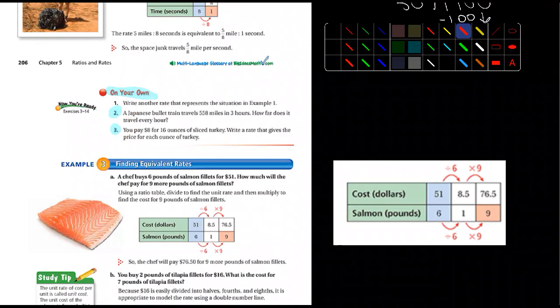Number two, it says a Japanese bullet train travels at 558 miles. Well, actually, I'm sorry. It travels 558 miles in three hours. How far does it travel every hour? Well, what would you do here? There's a simple thing you would do to figure out how far it would go in an hour. Mr. Alkema, your hand shot up. What do you think?